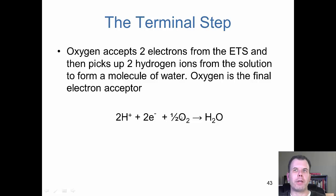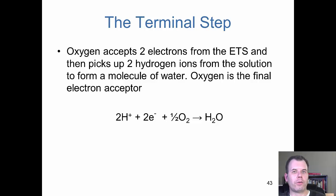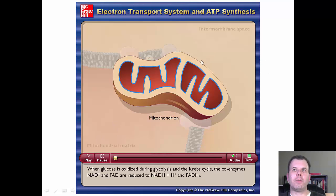The final step of electron transport uses oxygen to form water. When oxygen is split into singlet oxygens, those can be toxic radicals that build up and destroy cells. That's why bacteria need enzymes like superoxide dismutase and catalase to break down these toxic radicals. We'll talk more about this when we cover bacteria and oxygen tolerance. Essentially, oxygen gets reduced to ultimately form water at the end of the chain.